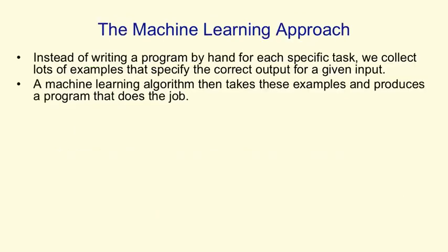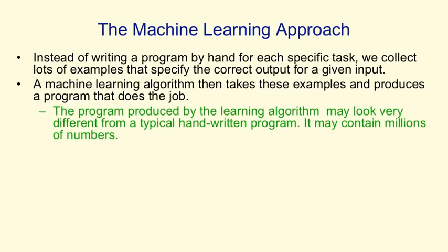The machine learning approach is to say, instead of writing each program by hand for each specific task, for a particular task we'll collect a lot of examples that specify the correct output for a given input. A machine learning algorithm then takes these examples and produces a program that does the job. The program produced by the learning algorithm may look very different from a typical handwritten program — for example, it might contain millions of numbers about how you weight different kinds of evidence.